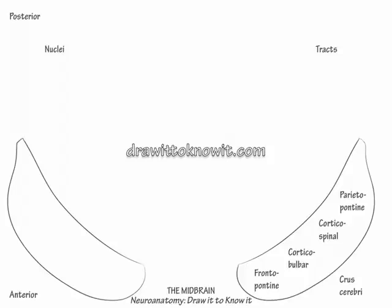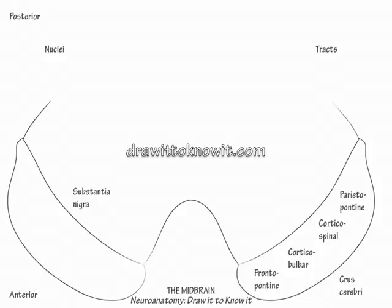We'll label the supplementary motor nuclei. Complete the basis of the midbrain and on the nuclear side of the page label the substantia nigra. Loss of dopaminergic cells in the compacta portion of the substantia nigra results in Parkinson's disease.